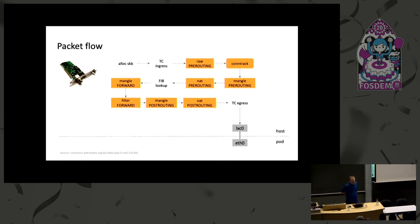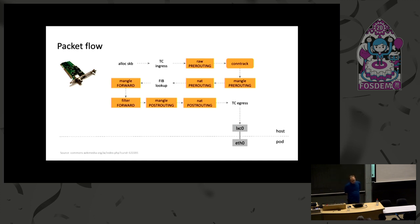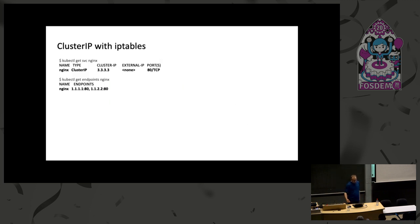To show you the basic packet flow: an SKB hits the TC ingress path, then all the yellow boxes are NetFilter related. You do a FIB lookup, and if you want to push the packet back out of the kernel, you hit the TC egress path and then send it to the device. To show an example of how KubeProxy installs rules with IPTables: if you create a service — Nginx in this case — with a virtual cluster IP of 3.3.3.3 and two endpoints, that's how it looks in IPTables.